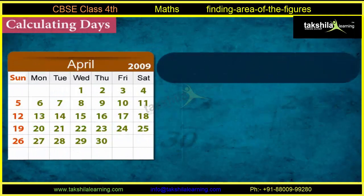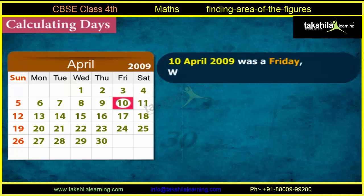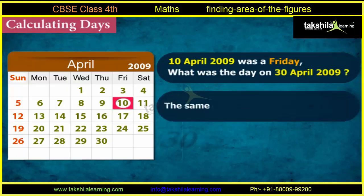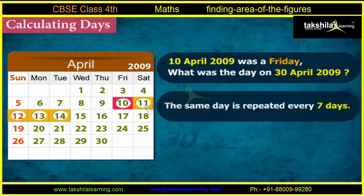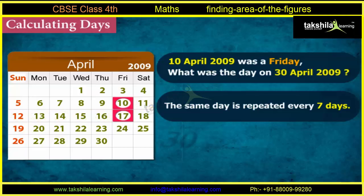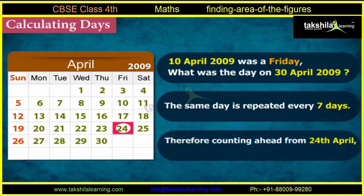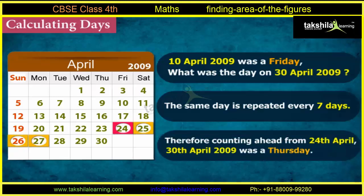Let us take another example. If 10th April 2009 was a Friday, what was the day on 30th April 2009? We know that the same day is repeated every seven days. So if 10th April 2009 was a Friday, the next Friday fell on 17th April and then on 24th April. Therefore, counting ahead from 24th April, 30th April 2009 was a Thursday.